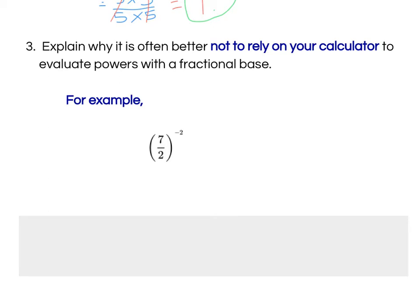So, essentially, this is what I'm typing in here. I'm just going to do this in red on the side. 7 divided by 2, and then I'm going to press my Y to the X button, and then my negative 2. And then I'm going to see what that works out to be.